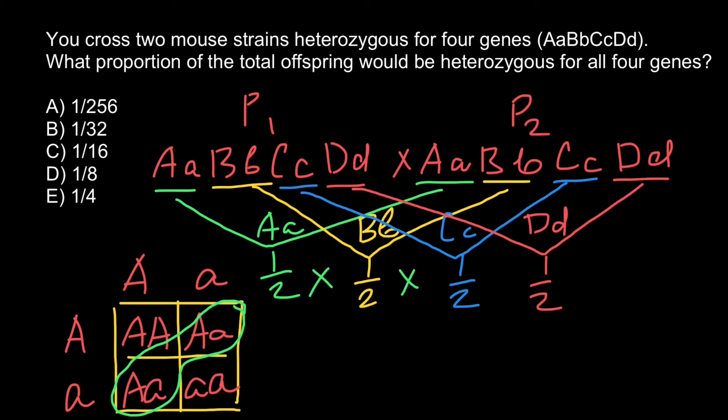Now we multiply all these independent probabilities: 1/2 × 1/2 × 1/2 × 1/2 = 1/16. This is answer C. In the progeny, we expect this genotype in one sixteenth of the total.